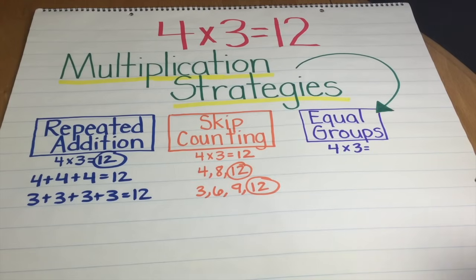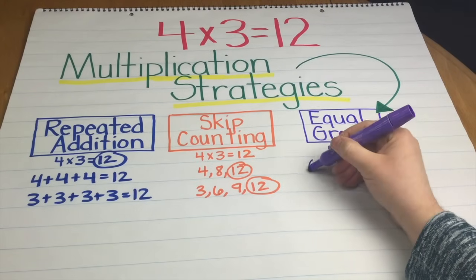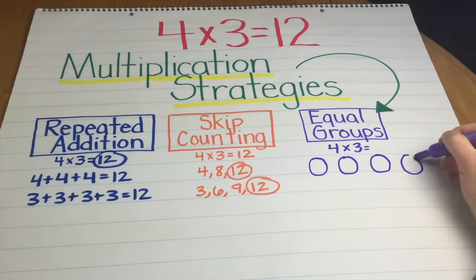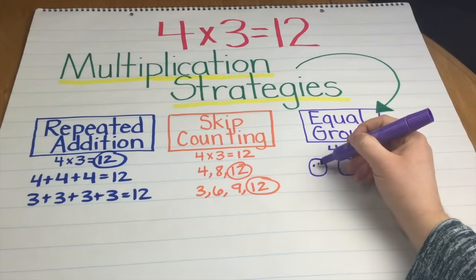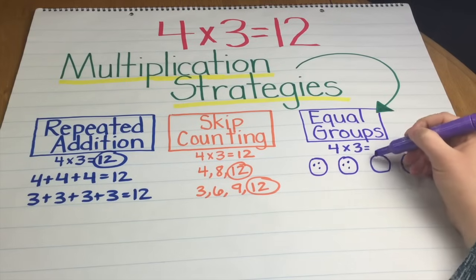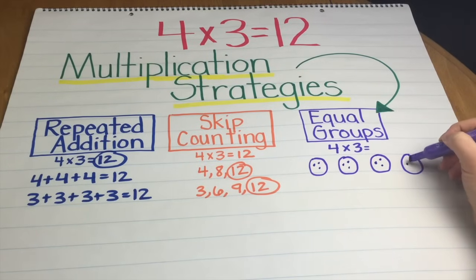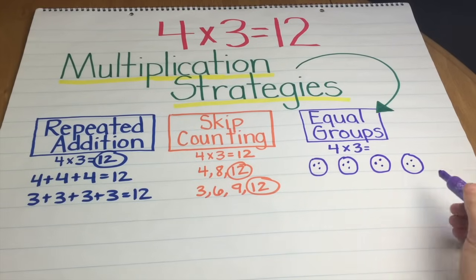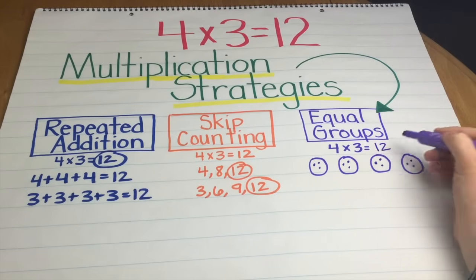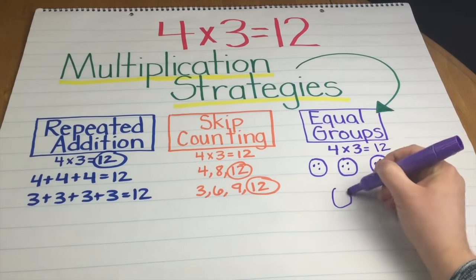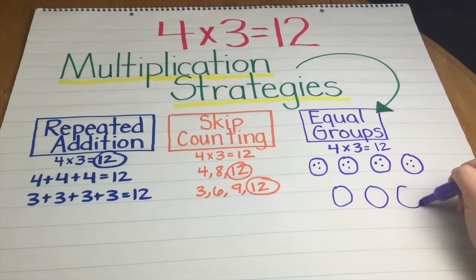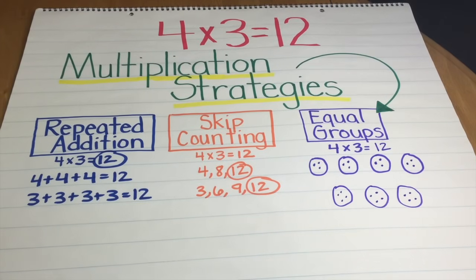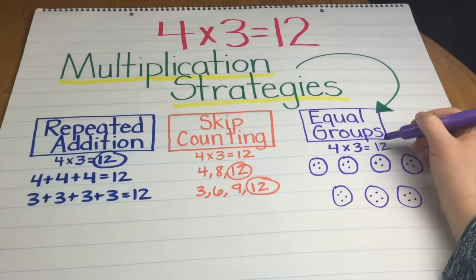I'm going to start with 4 plates because our multiplication problem is still 4 times 3. So here are my 4 plates and each plate is going to have 3 cookies. And then when I count them up: 3, 6, 9, 12, my answer then would be 12. And I can also show that with 3 groups of 4: 3 plates, 4 cookies on each for a total of 12 as our answer.